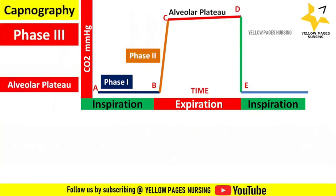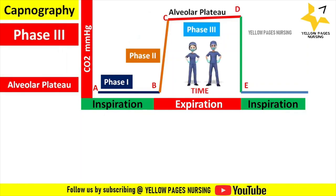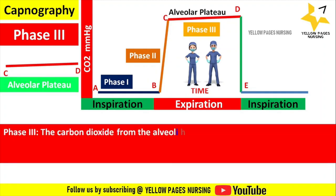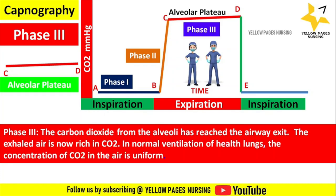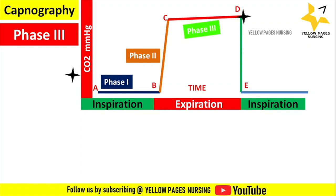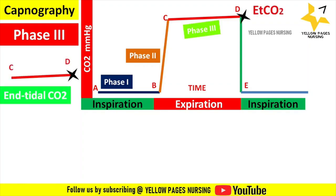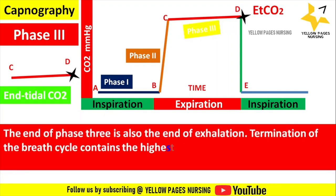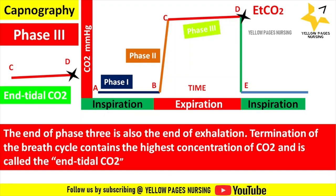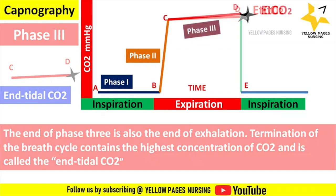Phase three, from C to D, is the alveolar plateau. Carbon dioxide from the alveoli has reached the airway exit; the exhaled air is now rich in carbon dioxide with a uniform concentration. The alveolar plateau is flat with a slight upward tilt. Point D marks the end of phase three, indicating end tidal CO2 — the end of exhalation containing the highest concentration of carbon dioxide.